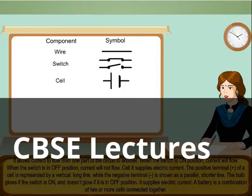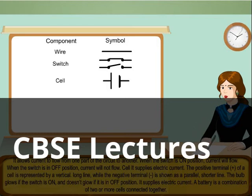Cell. It supplies electric current. The positive terminal, plus, of a cell is represented by a vertical long line, while the negative terminal is shown as a parallel shorter line.